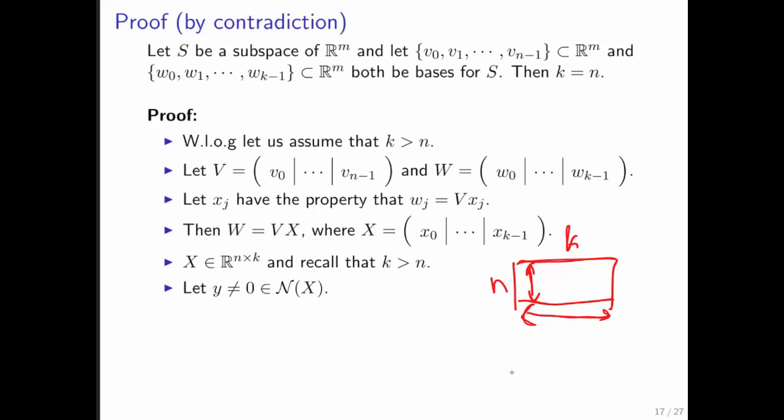What does that mean? Any time you have fewer rows than columns, there is a vector y in the null space of this matrix. Therefore, we have a nonzero y such that Xy equals zero. But then Wy equals VXy equals V(0) equals zero.